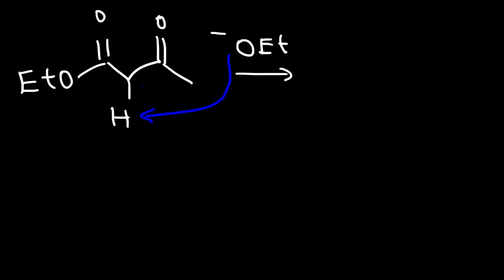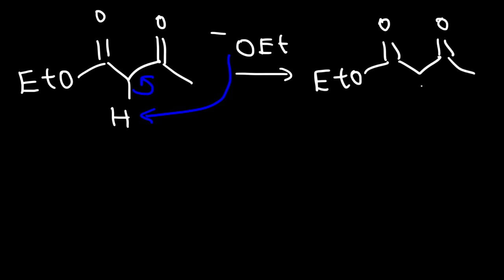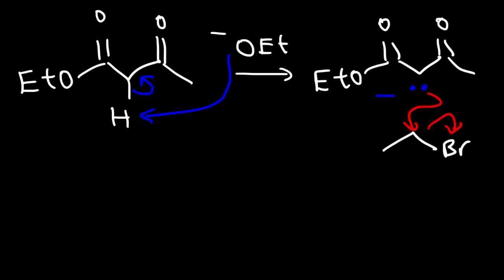In the first step, the alpha hydrogen will be removed. In the second step, we're going to react this species with an alkyl halide — so let's use ethyl bromide. The carbon with a negative charge will attack this carbon, expelling the bromine atom.